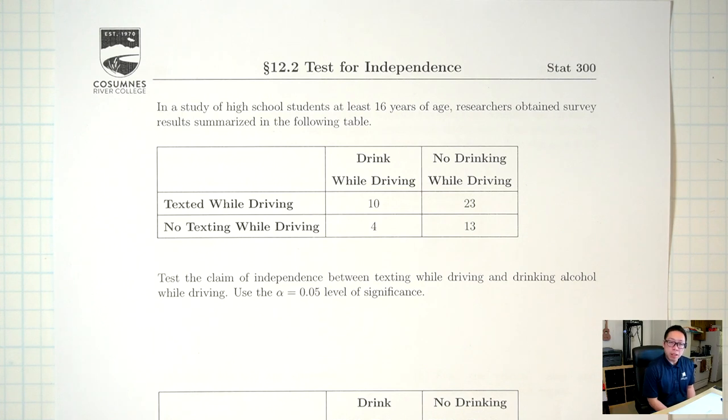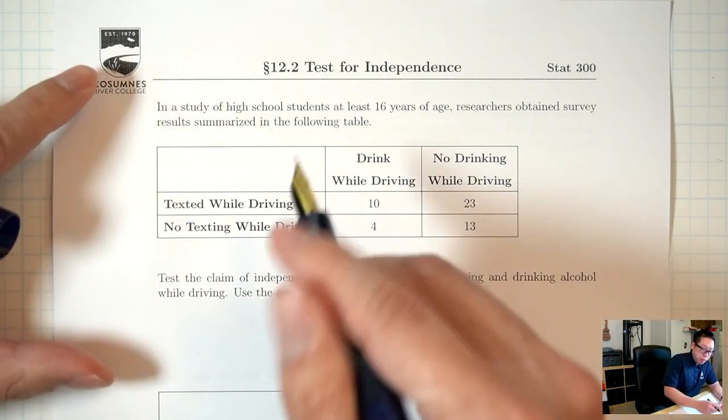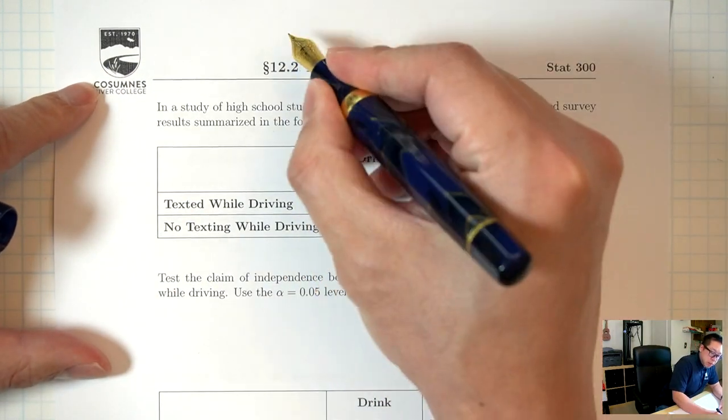Hello, in the last lecture we talked about the test for goodness of fit, and that was a chi-square test. Today we're going to talk about another type of chi-square test: the test for independence.